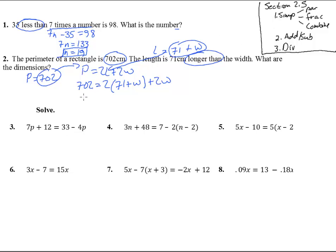We simplify by getting rid of the parentheses. 702 equals 142 plus 2W plus 2W. Combine all the like terms. So we have 702 equals 142 plus 4W. Subtract 142 from both sides, and we get 560 equals 4W. Divide both sides by 4, and we get W equals 140.